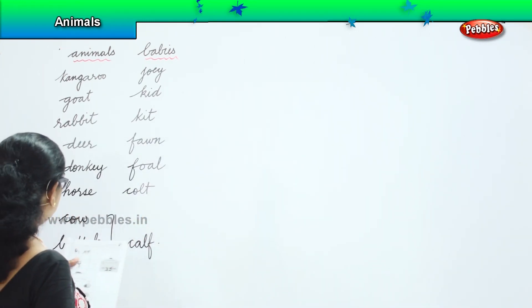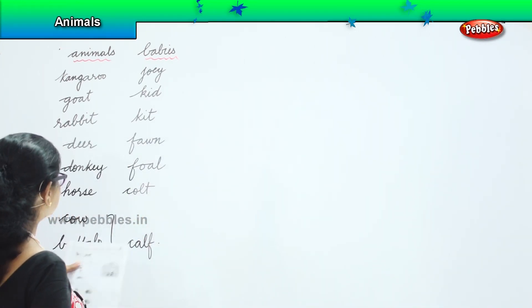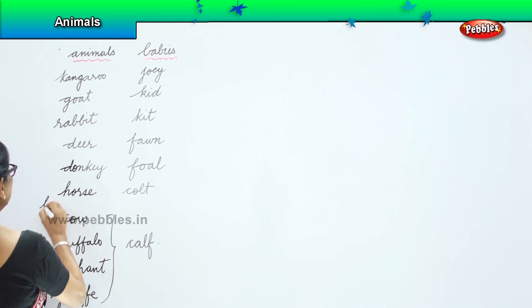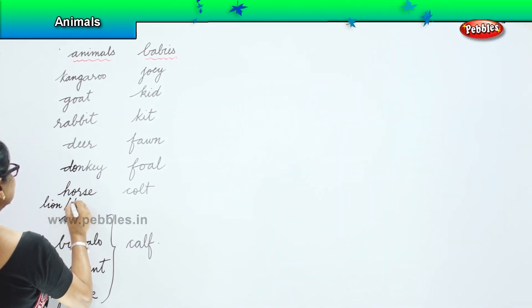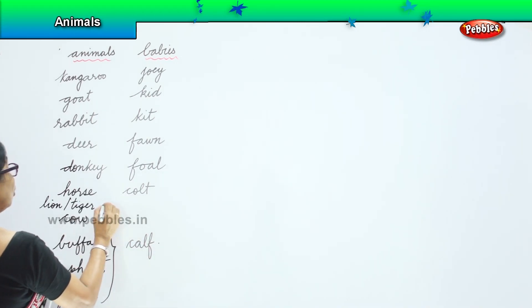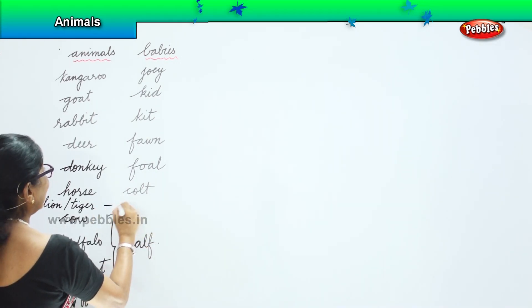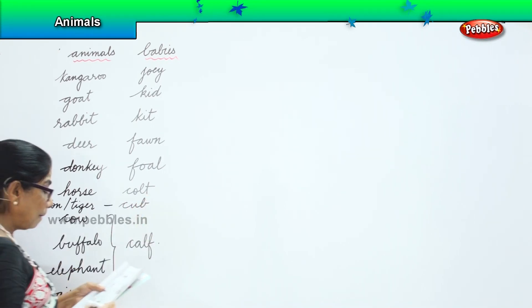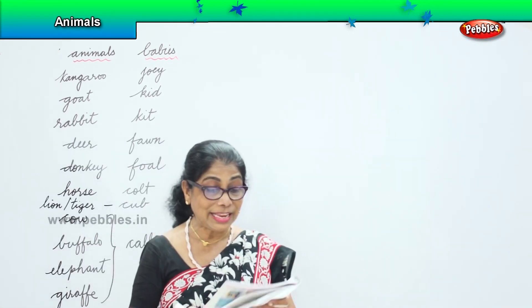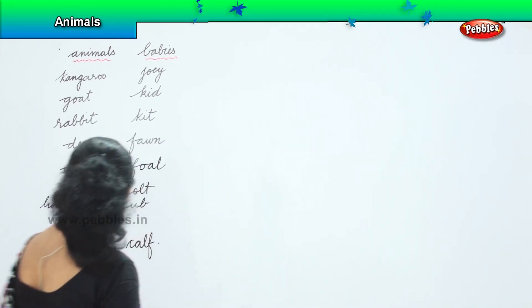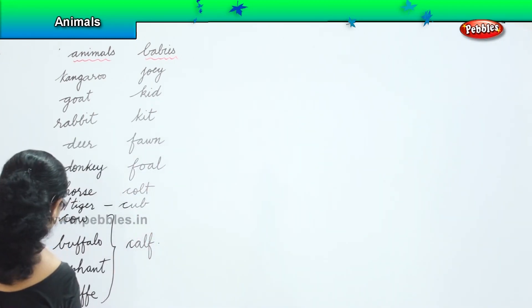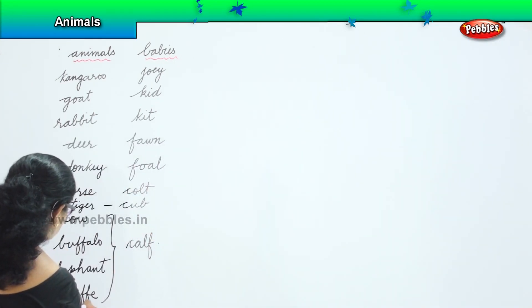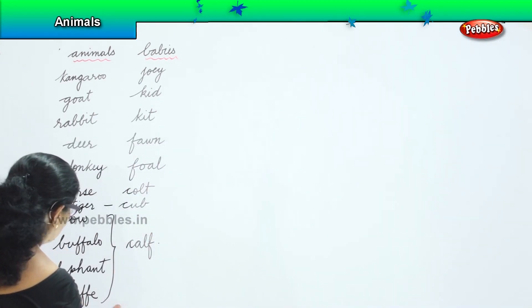Lion and tiger — their babies are called cubs. Okay. The monkey's baby is called an infant. What about fish? The fish baby is called a fry.